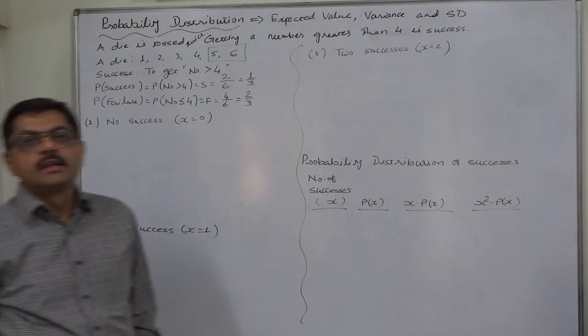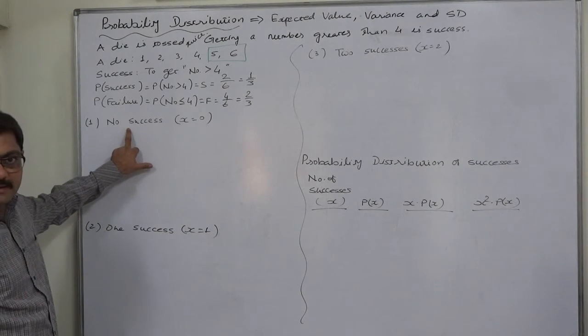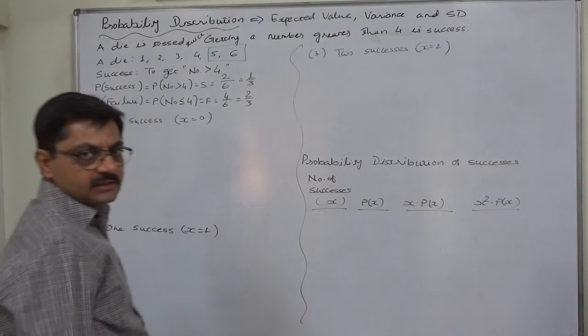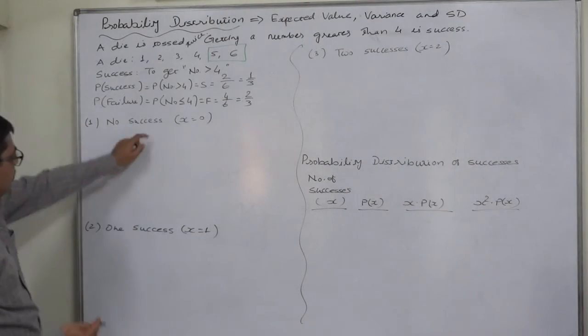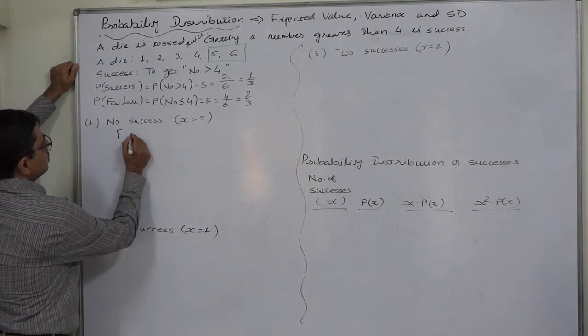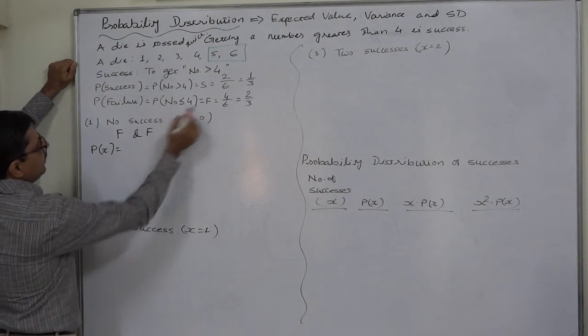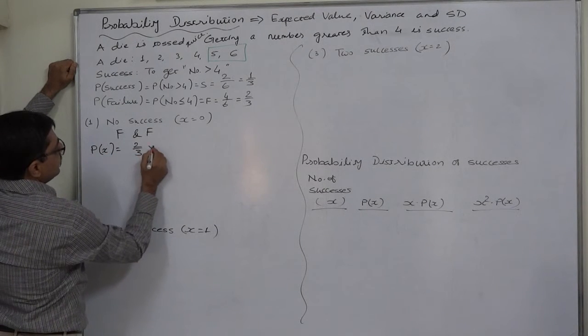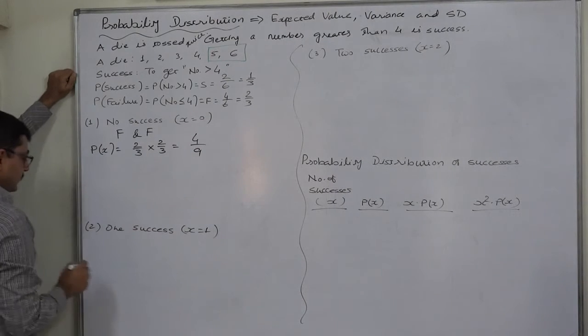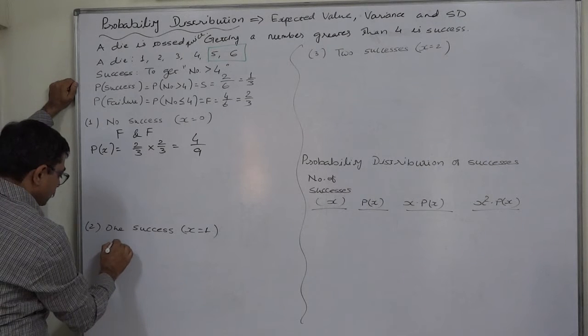So there will be three possible outcomes and they are: no success, one success, and all two successes. What is no success? That means failure and failure. So the probability will be failure is 2 by 3 multiplied by 2 by 3, so it comes to 4 by 9.